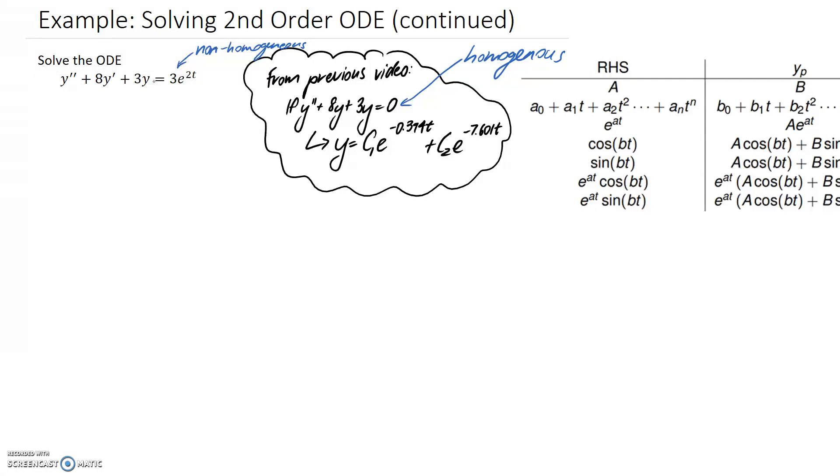So we're going to work through solving this, and of course the first step of these questions is usually to find the solution to the homogeneous part. But since we've already done that in the previous video, I'm not going to repeat it. So from that, what we can conclude is yh, so the solution to the homogeneous part, is equal to what we just had here from that previous video.